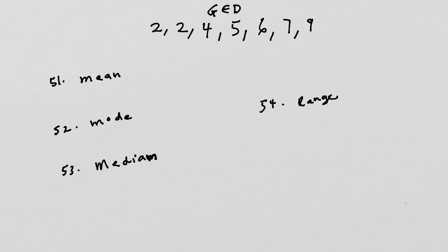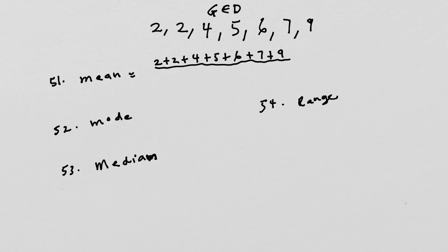Now to find the mean — the mean is the same as finding the average. What we do is add everything: two plus two plus four plus five plus six plus seven plus nine. Then divide by the number of terms, which is seven. When we add everything we get 35, so it's 35 over 7. And 35 divided by 7 is 5. So our mean is 5.